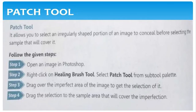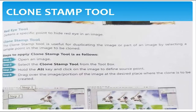Next one is the patch tool. The patch tool is used to select an irregular-shaped portion of an image. Suppose the image is not perfectly fine — by using the patch tool, we can conceal and fix it. Next one is clone stamp tool. The clone stamp tool is used to duplicate the image or part of an image by selecting the sample point in the image to be cloned.